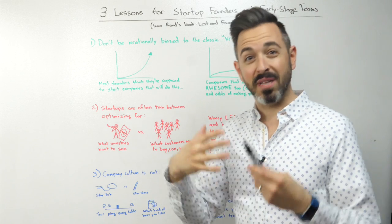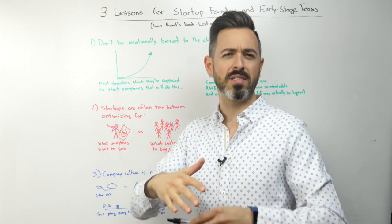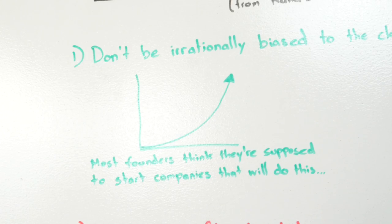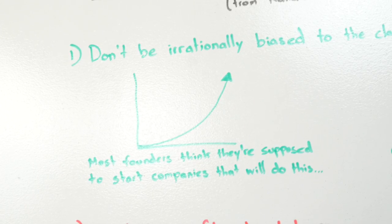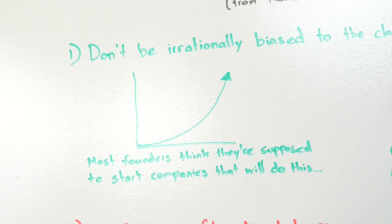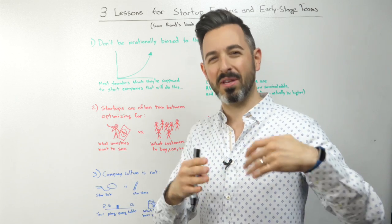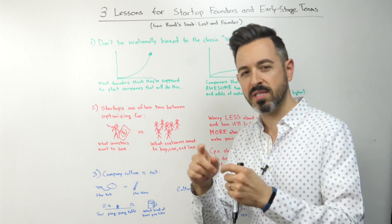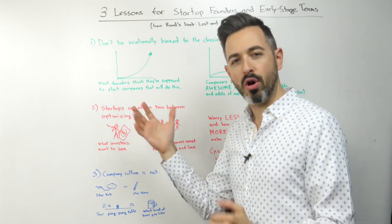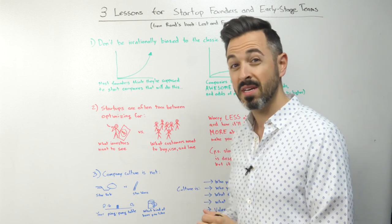First off, if you're a founder like me, I'm going to urge you not to be irrationally biased toward the venture capital classic Silicon Valley path. The problem is that this classic VC path gets so much media attention and amplification from sources that talk about companies who successfully made it through it. So a lot of founders think we have to go for hockey stick growth, that the only markets we should look at are ones that can do this.